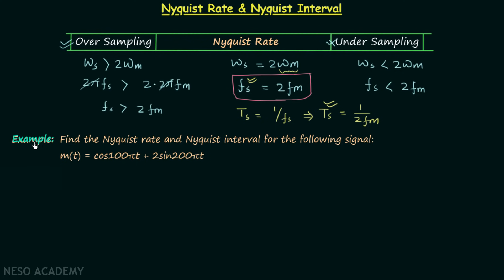In this example problem we need to find the Nyquist rate, meaning we need to find Fs, and we also need to find the Nyquist interval, meaning we need to find Ts. We need to find them for the following signal: m(t) is the message signal and it is equal to cos(100πt) + 2·sin(200πt).